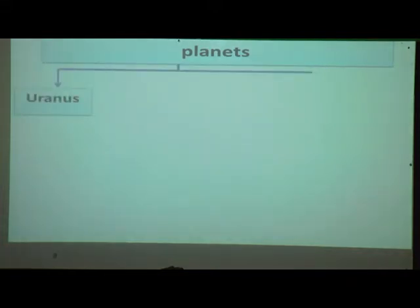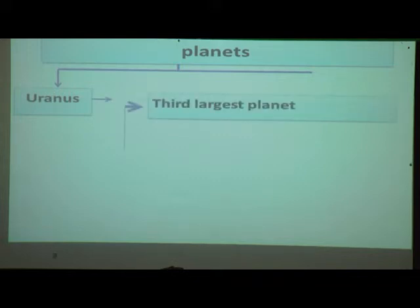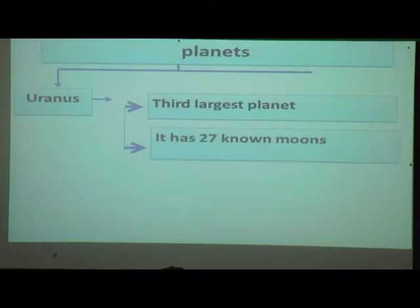Now we will see about Uranus. It is the third largest planet in the solar system. It has 27 known moons.